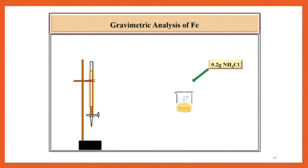Now add 0.2g NH4Cl to this hot solution and stir with a glass rod. Then add 1 to 1 ammonia solution slowly with constant stirring. A reddish brown precipitate of Fe(OH)3 is obtained.